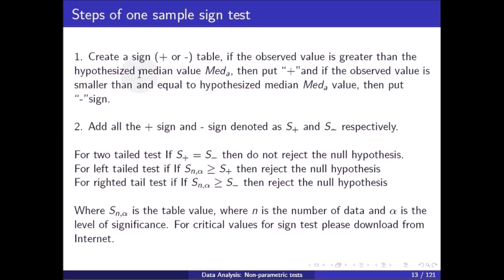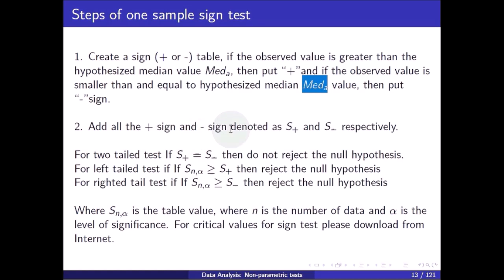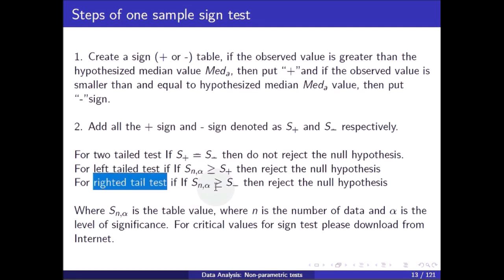For a left-tail test, the null hypothesis is that the median equals median A and the alternative is that the median is less than median A. For a right-tail test, the null hypothesis is that the median equals median A and the alternative is that the median is more than median A. The steps of the one sample sign test: create a sign plus/minus table. If the observed value is greater than the hypothesized median value median A, put a plus sign; if the observed value is less than or equal to median A, put a minus sign. Add all plus signs and minus signs, denoted as S-plus and S-minus respectively. For a two-tail test, if S-plus equals S-minus, do not reject the null hypothesis. For a left-tail test, if S(n, alpha) is greater than S-plus, reject the null hypothesis. For a right-tail test, if S(n, alpha) is greater than S-minus, reject the null hypothesis, where S(n, alpha) is the table value, n is the number of data points, and alpha is the level of significance.